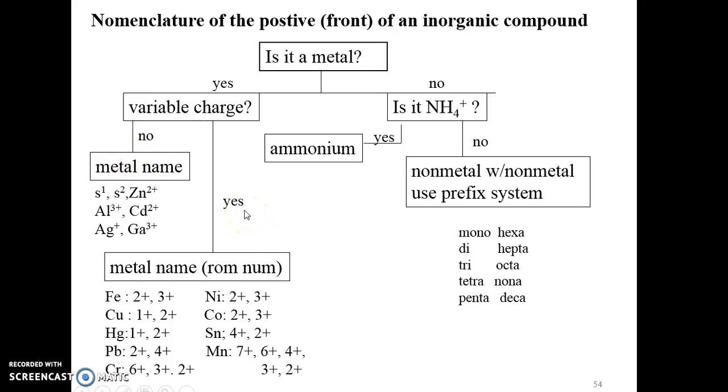If it can vary, that's that blue area in the periodic table. Then you say the metal name with the Roman numeral. So iron with a 2 positive is iron 2. Cobalt with a 3 positive is called cobalt 3.